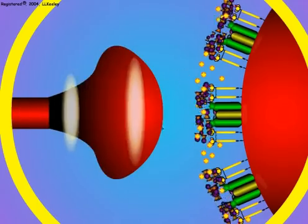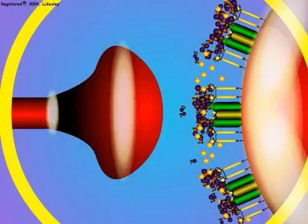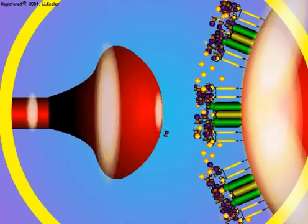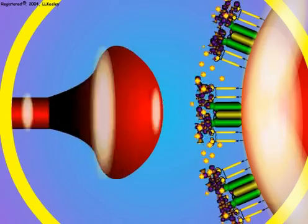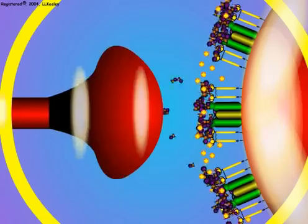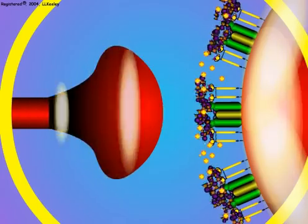The insecticide binds the acetylcholinesterase and the enzyme can no longer destroy acetylcholine. The accumulating acetylcholine constantly stimulates the sodium channel receptors and keeps the channels open so that sodium flows into the postsynaptic neuron and produces uncontrolled firing of nerve impulses.